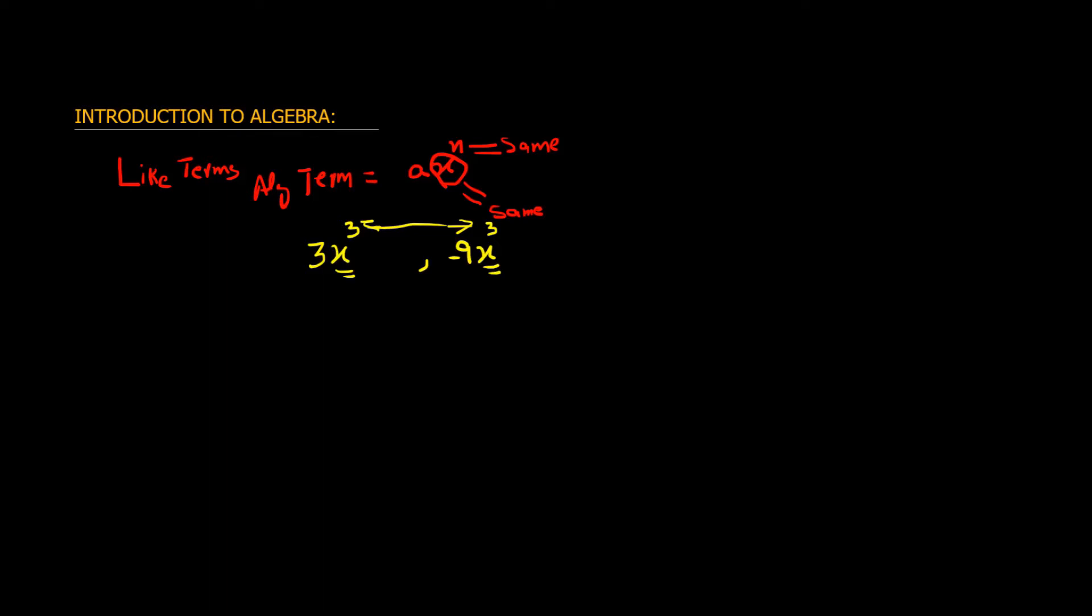The terms can have more than one letter as a base. For example, minus 5xy square and 2xy square. Both have same base, which is xy, and have same exponent, which is 2.